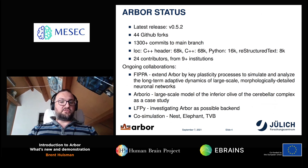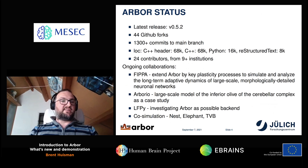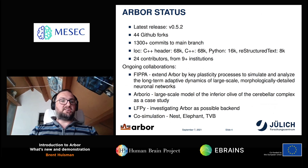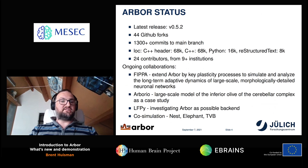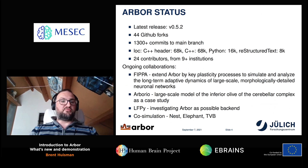Our latest release is 0.5.2. We have 44 GitHub forks, over 1300 commits to our main branch, about 68,000 lines of C++ header and code, about 16,000 lines of Python, 8,000 lines of documentation in structured text, and 24 contributors in total from at least nine institutions. I think that shows that Arbor is doing pretty well as a living project — we started in late 2016.